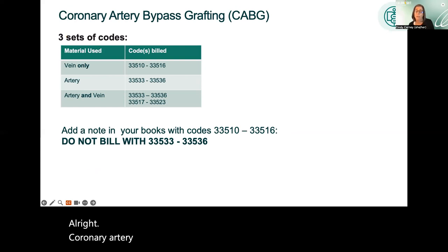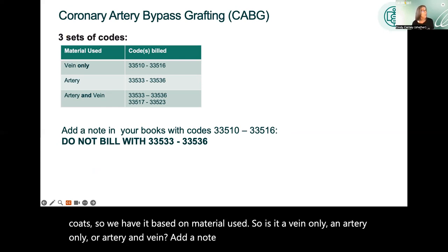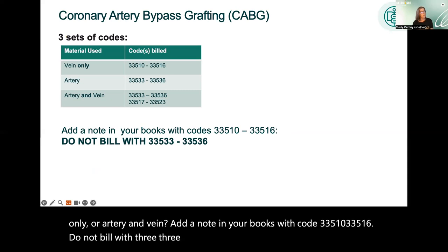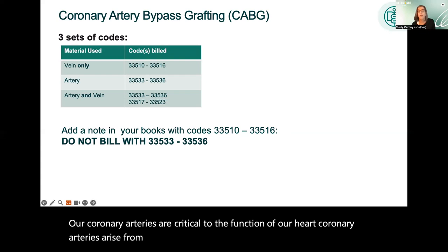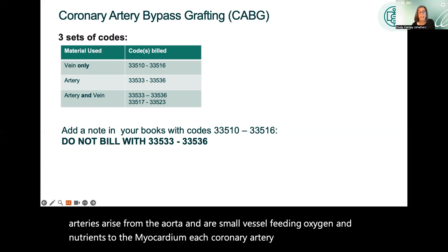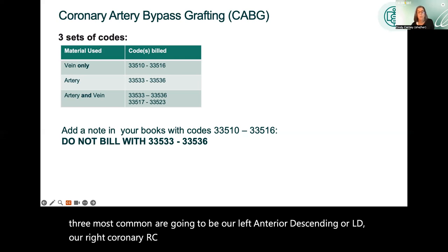Coronary artery bypass grafting, also known as CABG, has three sets of codes based on material used: vein only, artery only, or artery and vein. Add a note in your books with codes 33510 to 33516 — do not bill with 33533 through 33536. Coronary arteries arise from the aorta and feed oxygen and nutrients to the myocardium. The three most common are the left anterior descending (LAD), the right coronary (RC), and the left circumflex (LC).